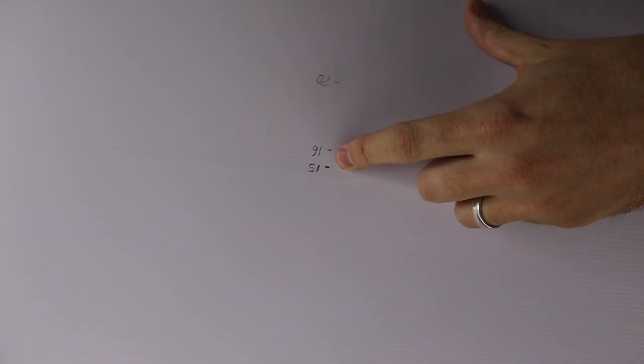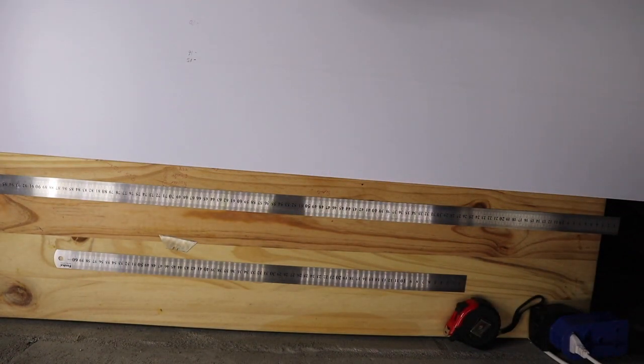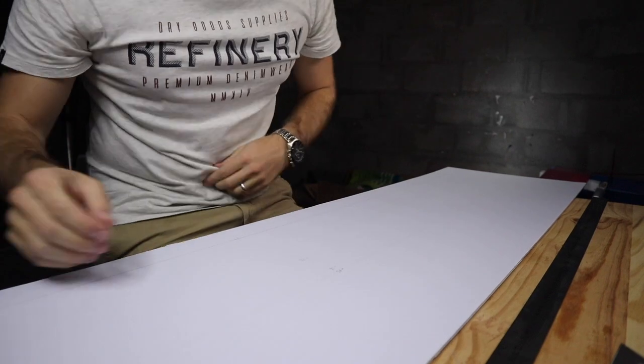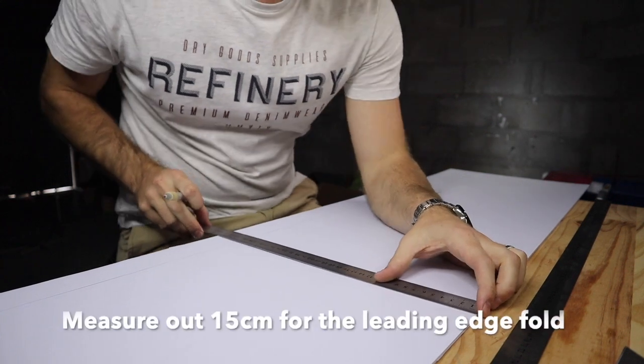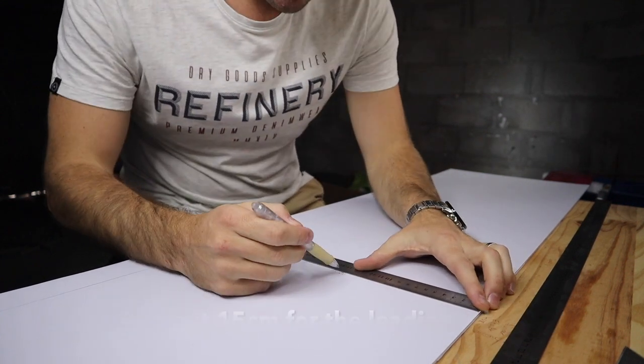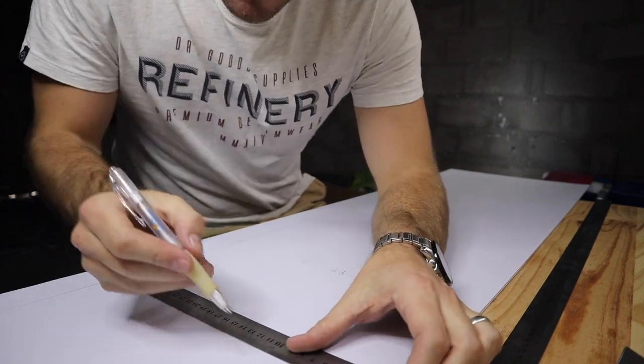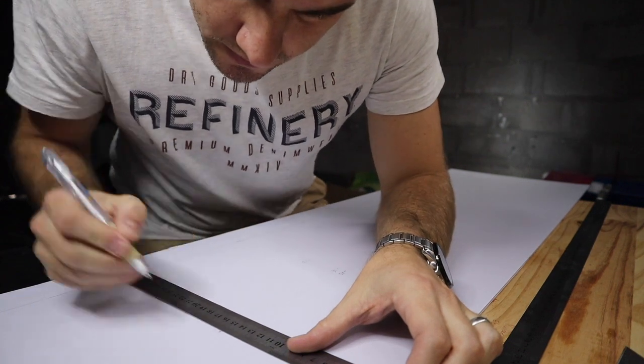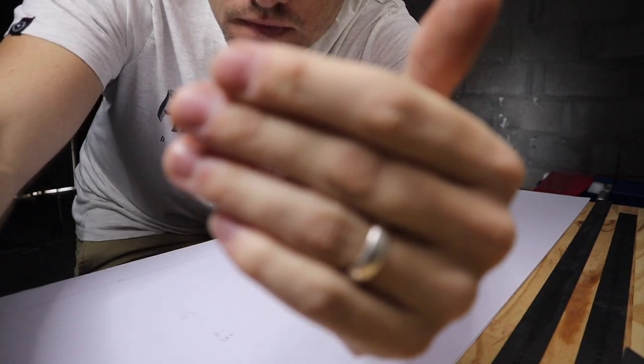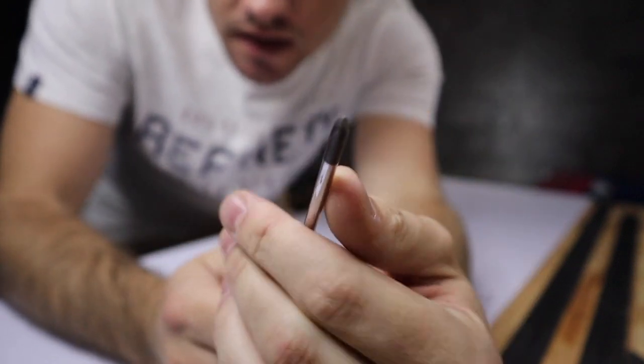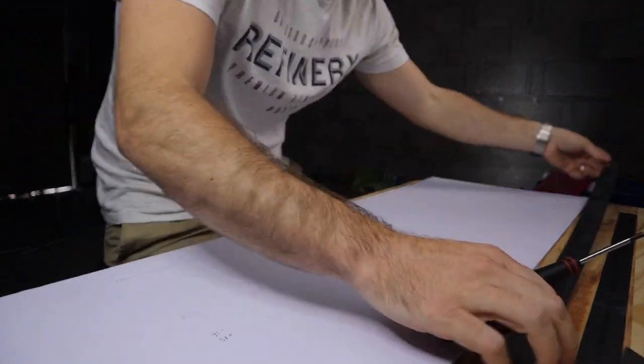Just going to measure out about 15 centimeters along the length for the fold. Then I'll grab some sort of a blunt object like this screwdriver just to crease the length for the leading edge. Just this length for the leading edge fold.